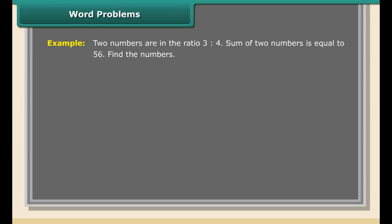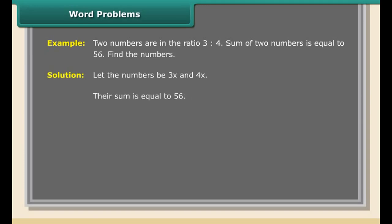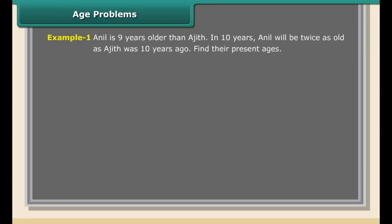Check: (original numerator + 1)/(original denominator + 3) = (4+1)/(7+3) = 5/10 = 1/2. This is correct.